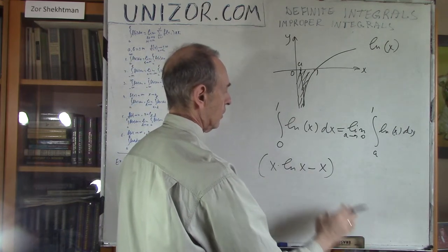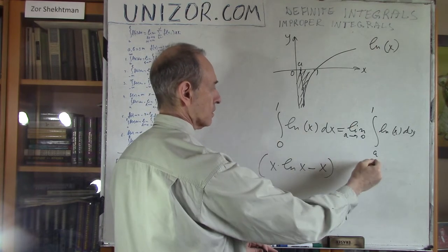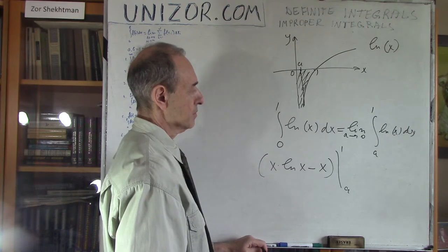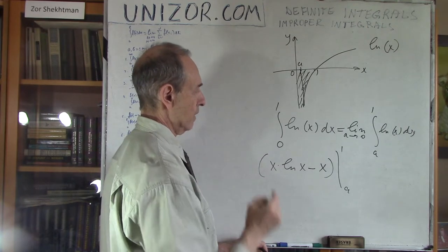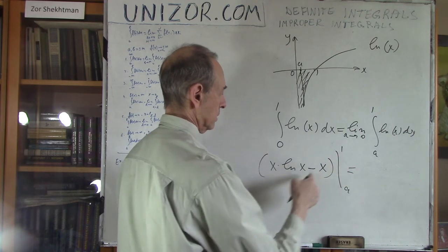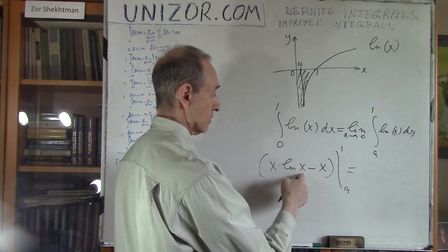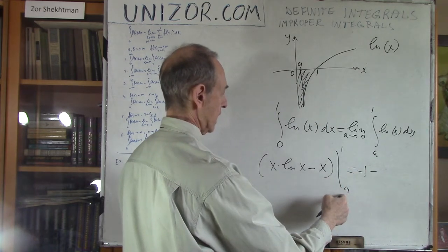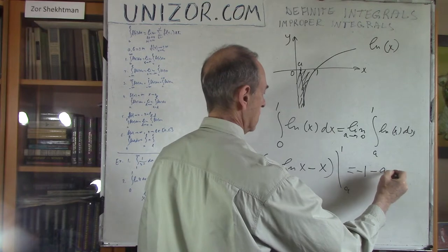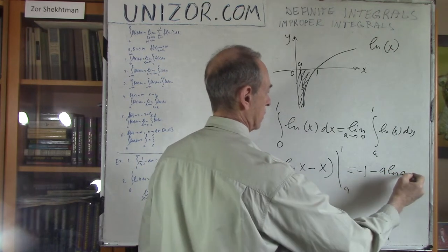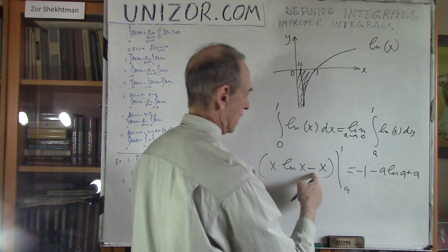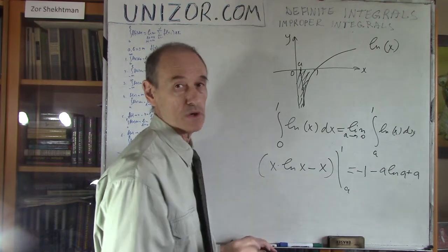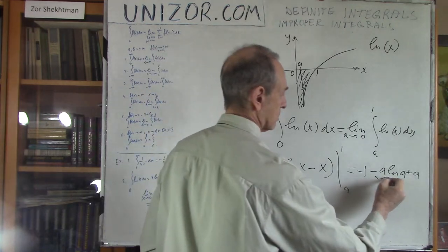This is definitely a finite piece, so I can calculate it. The indefinite integral of ln(x) is x·ln(x) − x. Let's verify: the derivative of x·ln(x) − x is, by the product rule, 1·ln(x) + x·(1/x) − 1 = ln(x) + 1 − 1 = ln(x). So this is the correct indefinite integral. Now substituting: putting the upper limit 1 gives 1·ln(1) − 1 = 0 − 1 = −1. Putting the lower limit a gives a·ln(a) − a, with a minus sign in front, so it becomes: −1 minus (a·ln(a) − a) = −1 − a·ln(a) + a.